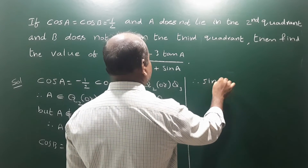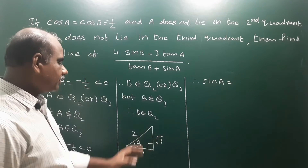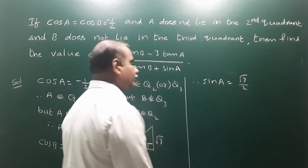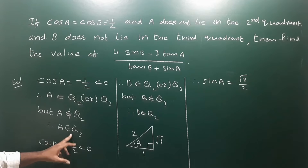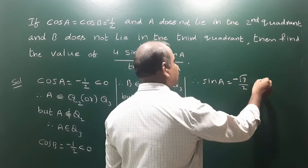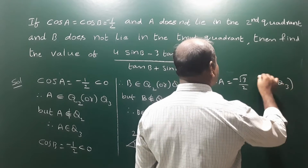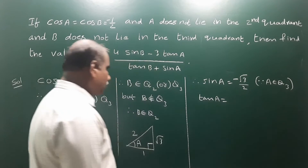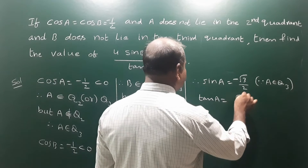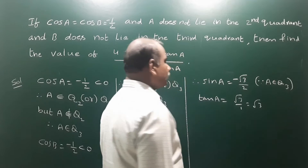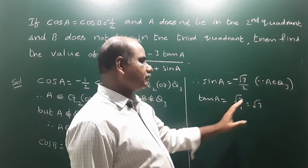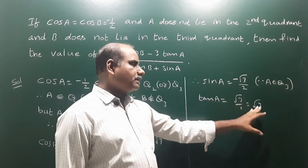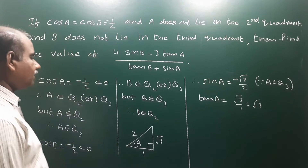Therefore, sin a equals opposite by hypotenuse, which is root 3 by 2. But since a belongs to Q3, sin is negative, so sin a equals minus root 3 by 2. Next, tan a equals opposite side by adjacent side, which is root 3 by 1, that is root 3. Since a is in the third quadrant, tan is positive, so tan a equals plus root 3.